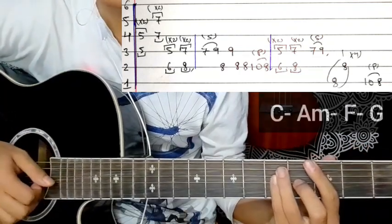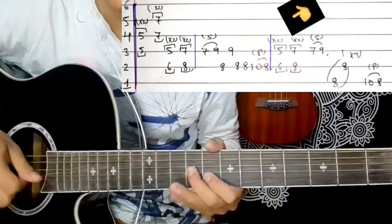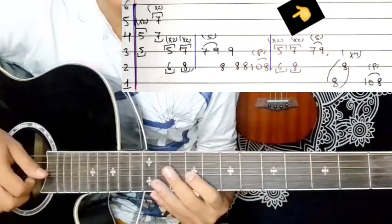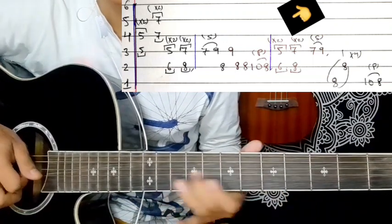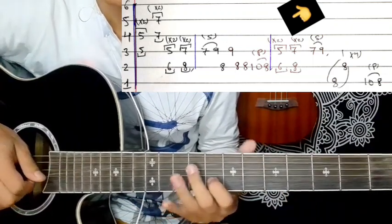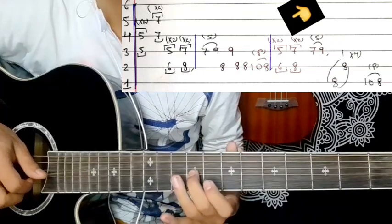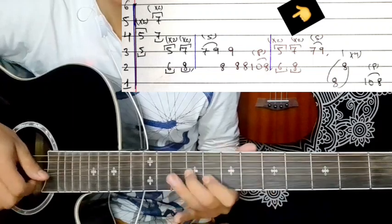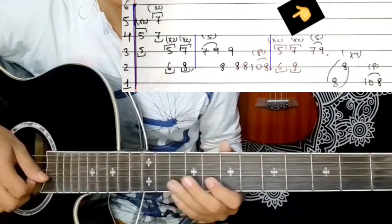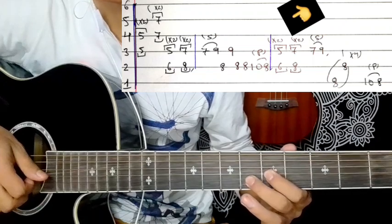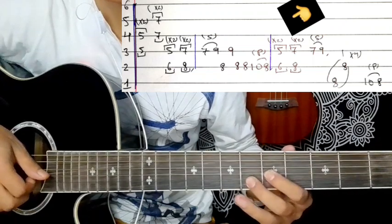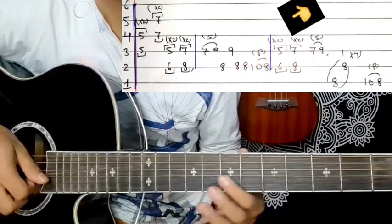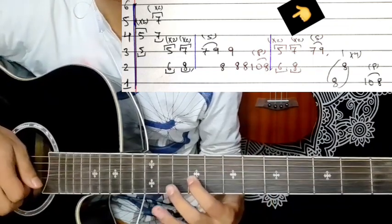Now for the fill pattern: fifth string fret nine with a slide, second string fret eight to nine, then eight to ten with a pull-off. Then second string fret six and first string fret seven to eight. Then seven to nine with a slide.